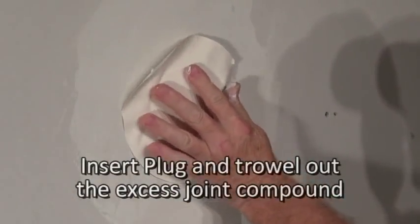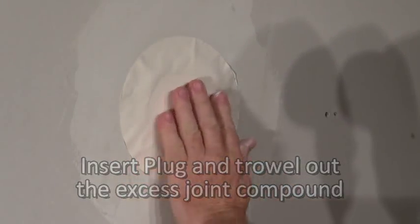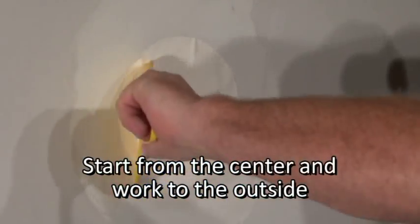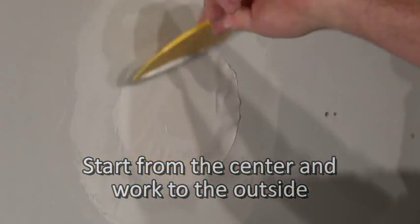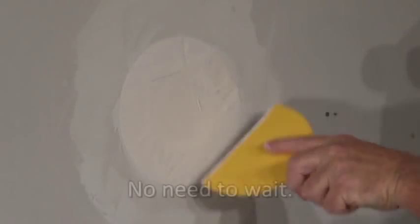Insert the plug into the hole and trowel out the excess compound moving from the center of the plug to the outer edge until the paper is smooth against the surface of the wall. If bubbles appear, lift the paper and add more compound and trowel out the excess.